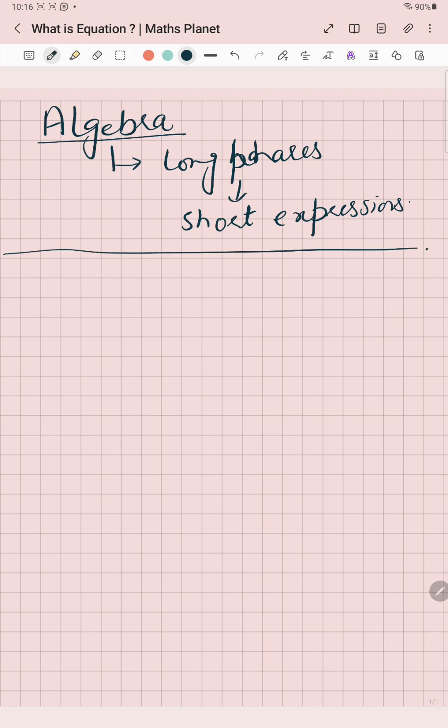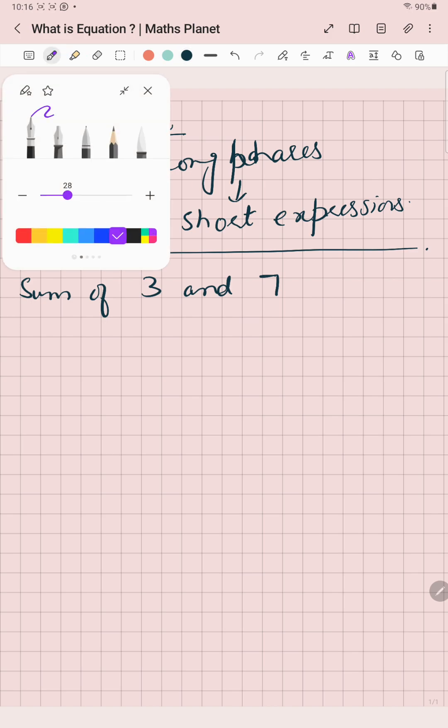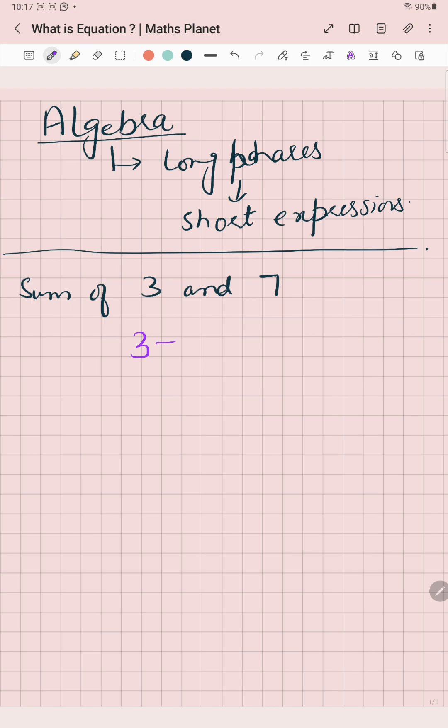Let's learn by using variables. Sum of 3 and 7 - how can I write sum of 3 and 7? I can write it like this: 3 plus 7. This is called a numerical expression.